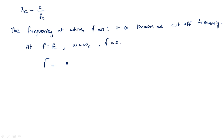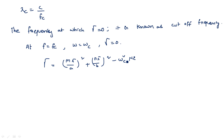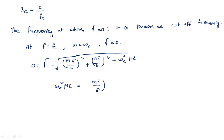At f = fc, or omega = omega c, gamma = 0. Substituting into the expression: (mπ/a)² + (nπ/b)² − ωc²με = 0, so ωc²με = (mπ/a)² + (nπ/b)².